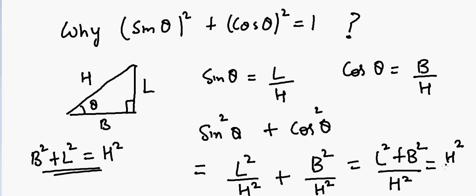H squared divided by H squared, and that's one. So that is why we have sine squared theta plus cosine squared theta is equal to one.